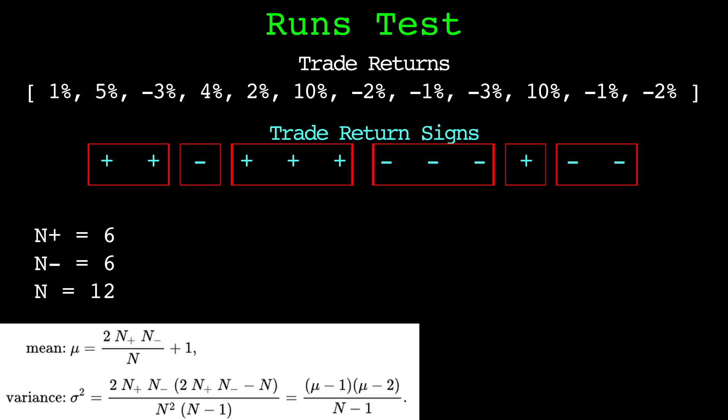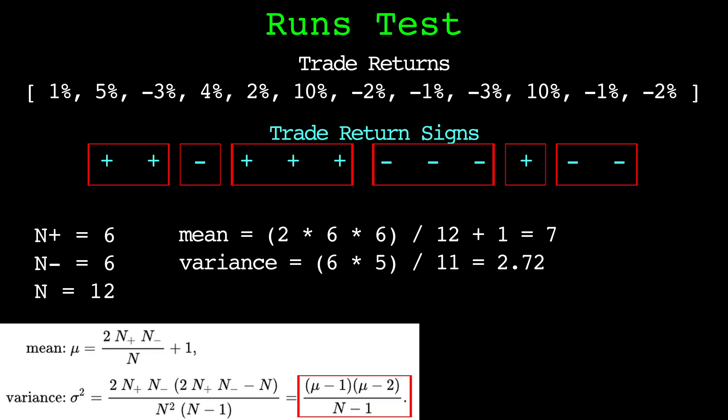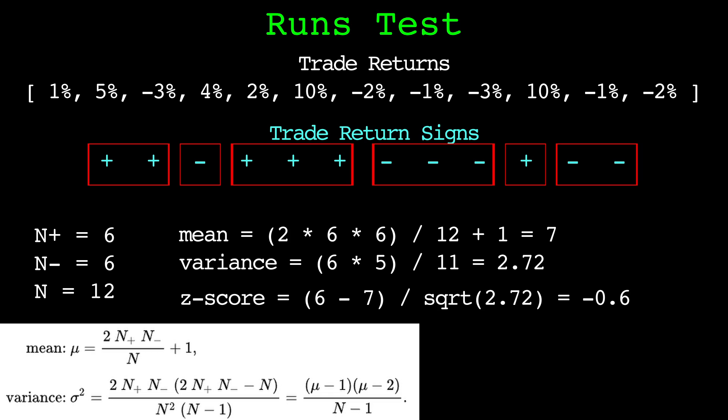The runs test equations give us the mean and variance of the number of runs we would expect to see from independent observations. In this example series we have six positive and six negative observations. We plug in the numbers to the equation to get the mean value of expected runs, then plug in the mean values to the variance equation to get the expected variance. If we take the square root of the variance we get the standard deviation, then with the mean and standard deviation we can compute the z-score of the observed runs. A positive z-score means we observed more runs than we would expect from an independent sequence. In the context of trade returns, a positive z-score is a tendency for losers to be followed by winners and winners to be followed by losers.